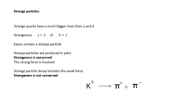So if you produce a strange, you produce an anti-strange at the same time. So when they are produced, strangeness is conserved, and the strong force is involved. When strange particles decay, the weak force is involved, and strangeness is not conserved. So when they are produced, strangeness is conserved. When they decay, strangeness is not conserved, which is a bit strange, which is why they're called strange particles.